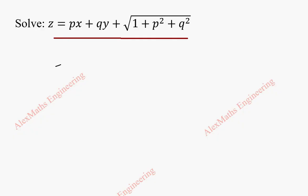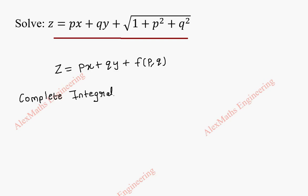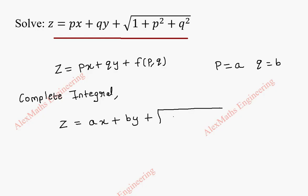This is of the form z equal to px plus qy plus f of p, q. To get the complete integral, we replace p as a and q as b. So, the complete integral will be z equal to ax plus by plus root of 1 plus a square plus b square, where a and b are arbitrary constants.